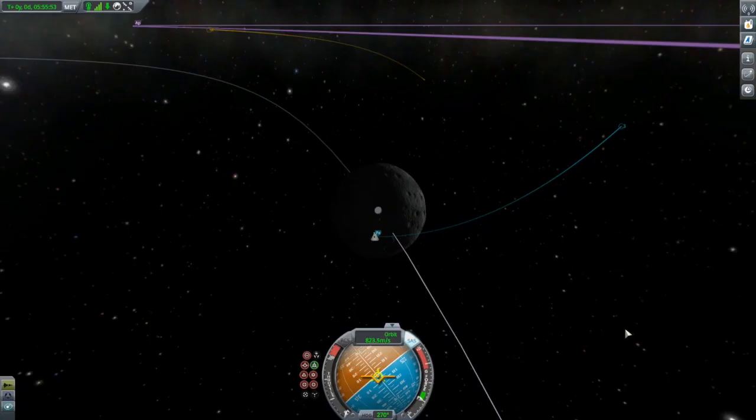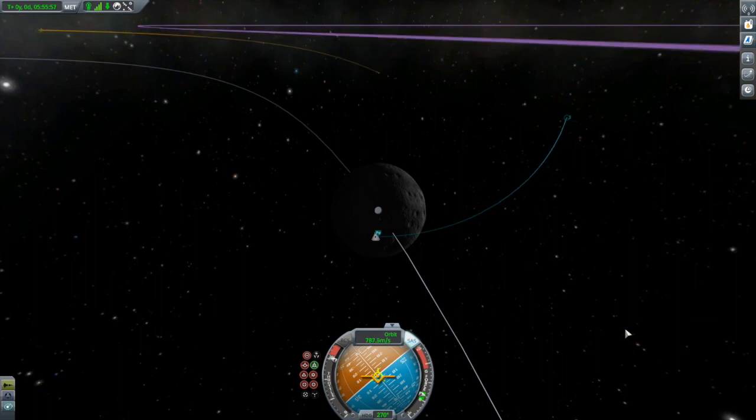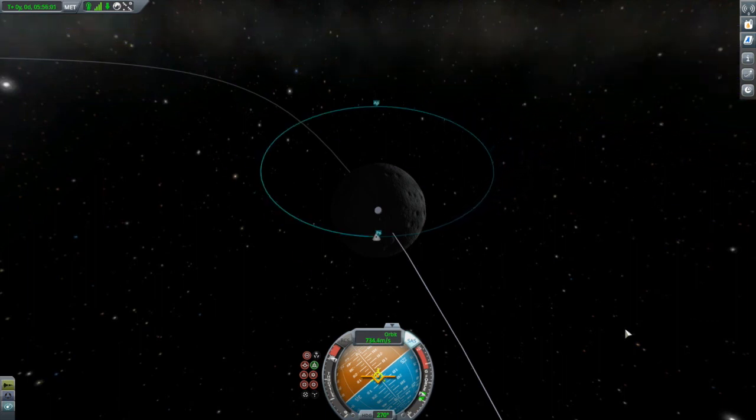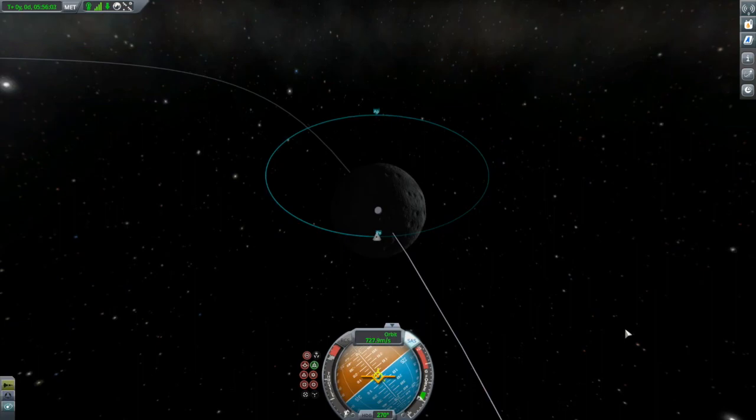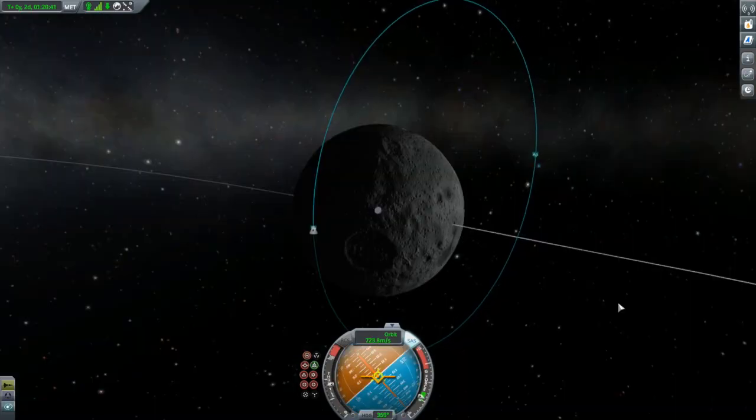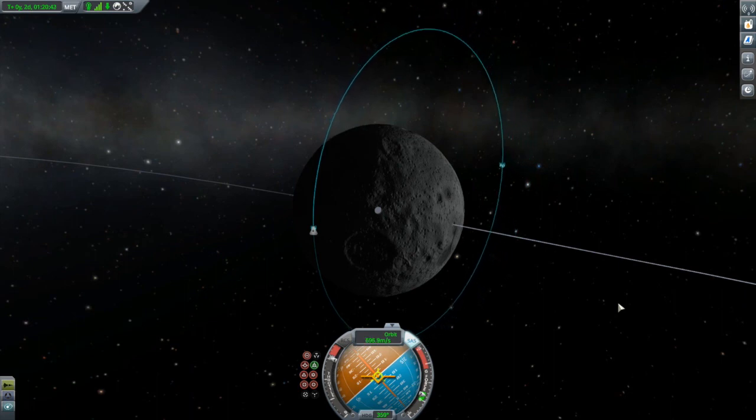Of course, if we were coming into the moon needing to make an inclination change to get our desired orbit, we would never bring our apoapsis down in the first place. Instead, we would leave it high after our capture, perform the necessary inclination change, and then afterwards bring the apoapsis down to the desired altitude.